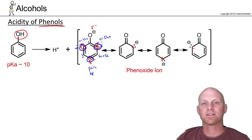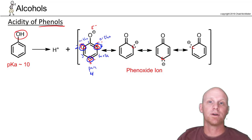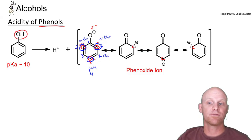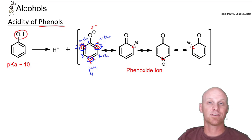A substituent at the 3-position will still have some effect, but it won't be very large. Positions 2 and 4 have the biggest effect. However, position 2 is closer in proximity, so there's a larger inductive effect there — position 2 has the single biggest effect, then position 4, then position 3. Normally with regular induction we'd expect 2, then 3, then 4 in order of proximity, but because of where the negative charge is shared, it's actually 2, then 4, then 3.